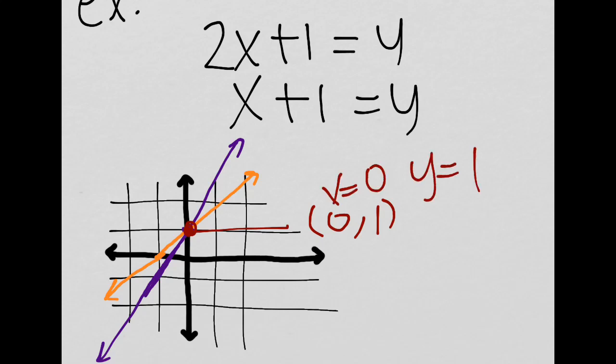Let's see if this makes sense. 2 times 0 is 0, plus 1 is equal to y. Yes.